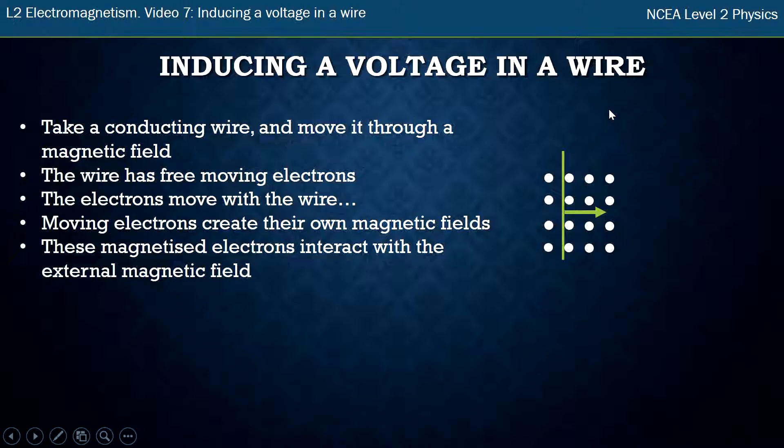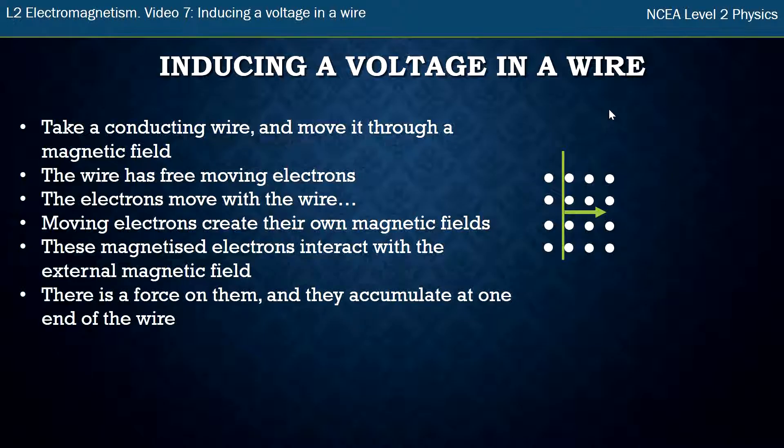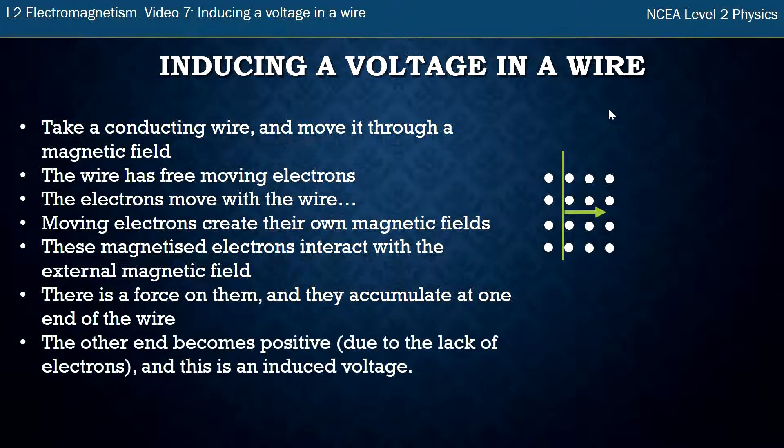We know when we bring two magnetic fields together, there's a force. So there's a force on these electrons, and what happens is it pushes them to one end of the wire. They all accumulate at that end. The other end of the wire becomes positive because all the electrons have been moved one way, which leaves a positive charge at the other end. So you have one end negative, one end positive. You've kind of got a battery, a positive and a negative end. That's inducing a voltage.